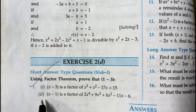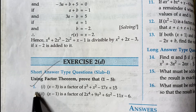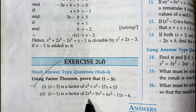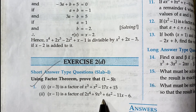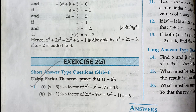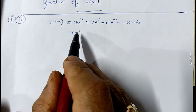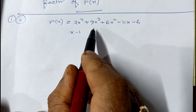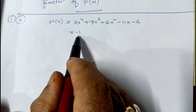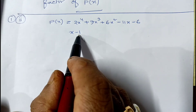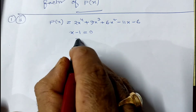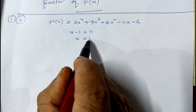In the second part of question number 1, we have to prove that x minus 1 is a factor of 2x to the power 4 plus 9x cubed plus 6x squared minus 11x minus 6. This is the given polynomial and we have to prove that x minus 1 is a factor of it. So we write x minus 1 equals 0, which means x equals 1.